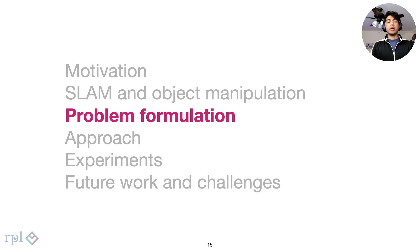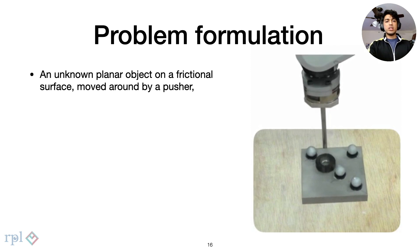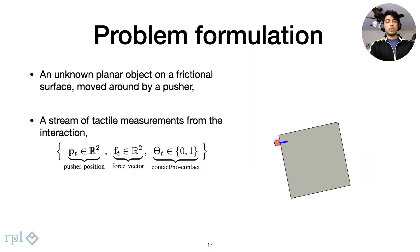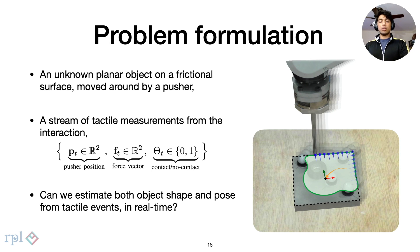We now concretely define our problem formulation. We consider a pusher-slider system on a frictional surface. The pusher has a single point force-torque sensor and interacts with the object. This generates a stream of contact points, normal reaction measurements, and end effector positions. It follows a contour-following scheme where we circumnavigate this object. Our work considers the question: can we estimate both the object's shape and pose from these measurements in real time?